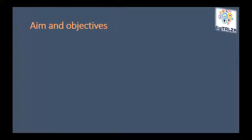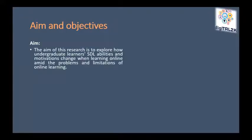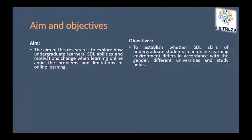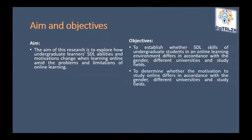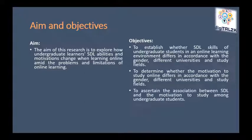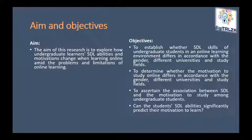The aim of this research is to explore how undergraduate learners' self-directed learning abilities and motivations change when learning online, amid the problems and limitations of online learning. The objectives are: firstly, to establish whether SDL skills of undergraduate students in an online learning environment differ by gender, university, and field of study; secondly, to determine whether motivation to study online differs by those same variables; and finally, to ascertain the association between SDL and motivation to study among undergraduate students.